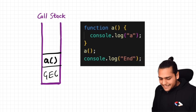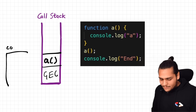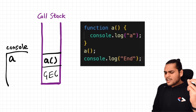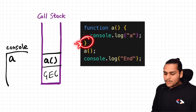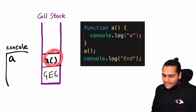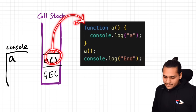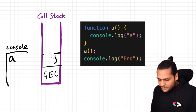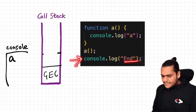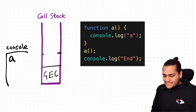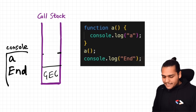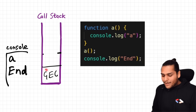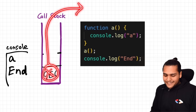Let's create a console. So 'a' will be printed inside this console. Now it moves to the next line, it sees that there is nothing more to execute, so it pops off this execution context of a out of the call stack. The control moves on, it executes console.log('end') and prints 'end' into the console. After executing this line, there is nothing more to execute. Our global execution context also pops off the call stack. We are done running our code.